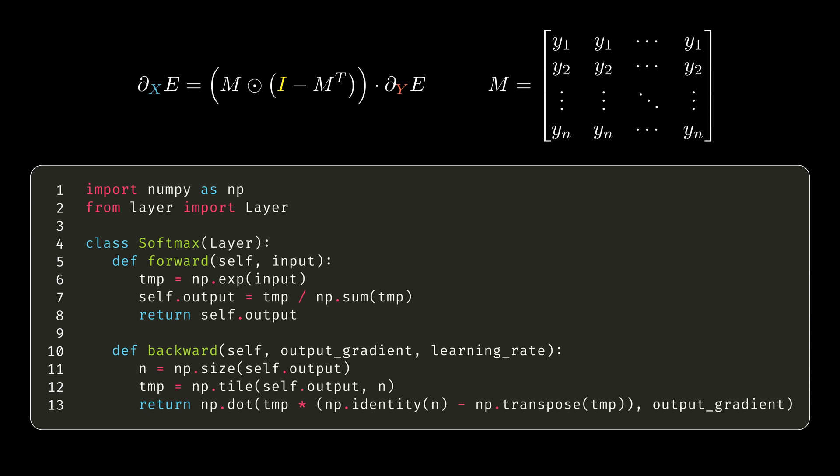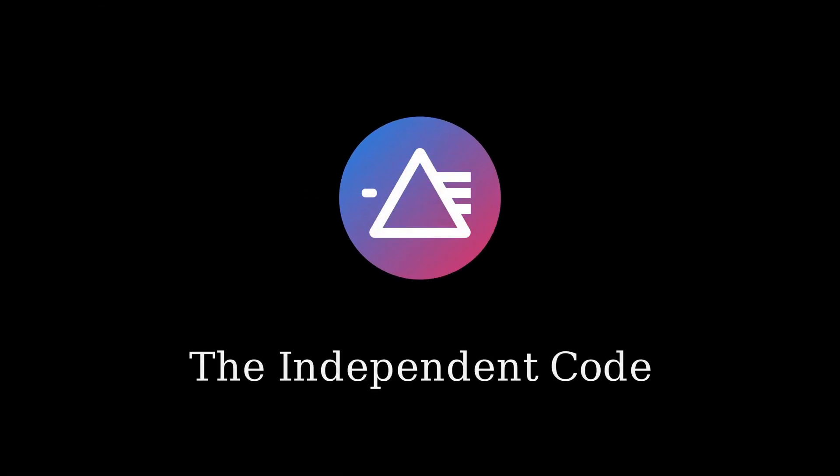You could use it, for instance, on the mnist code from last video, as a last layer instead of the hyperbolic tangent. The code of the video is on a github repository, the link is in the description. Don't forget to follow the twitter account of the channel, and I'll see you next time.